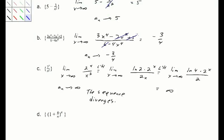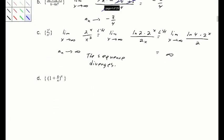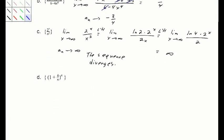For part D, we notice this is of the indeterminate form 1 to the infinity, as the inside portion goes to 1 raised to the infinity. We need to modify this. Let's first take the natural log of the limit of (1 plus 4 over n) to the n.